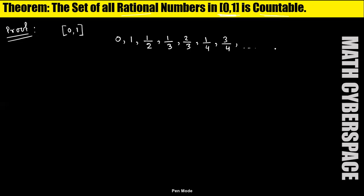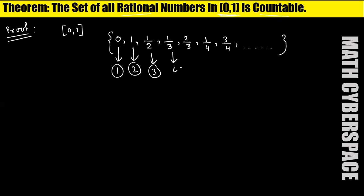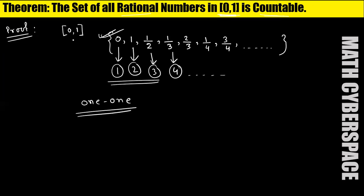In this way, we can arrange all the rational numbers in the closed interval [0,1]. If we consider zero as our first element, one as our second, one-half as our third, one-by-three as our fourth, and so on — we can identify each element with a particular natural number. That means we can find a one-one correspondence between the rational numbers in [0,1] and the natural numbers. So we can say there exists a one-one correspondence between these two sets, which means the set of all rational numbers in [0,1] is countable.